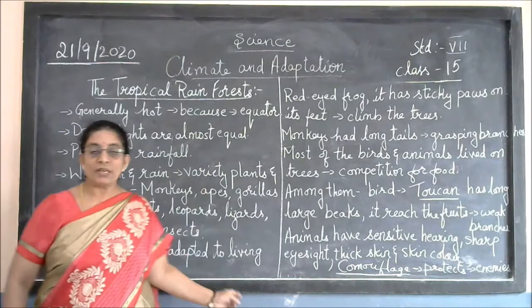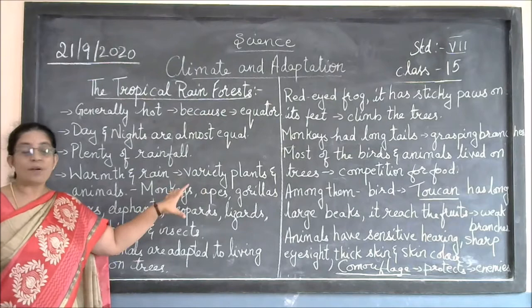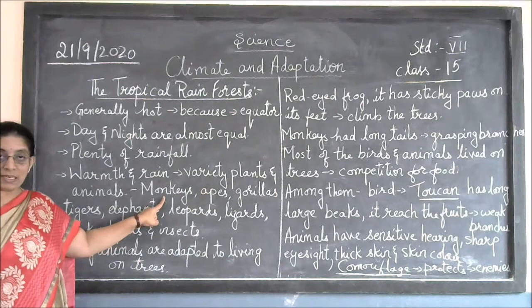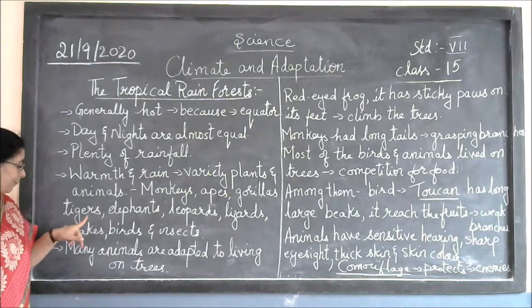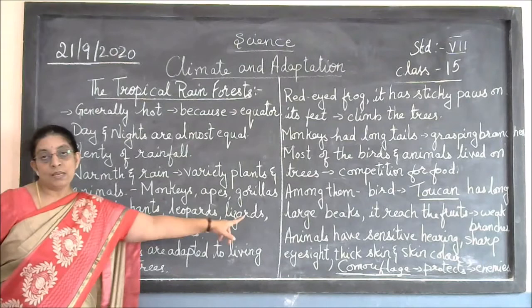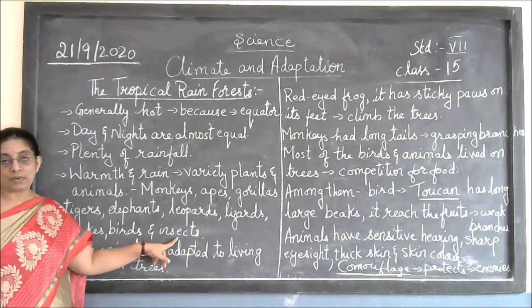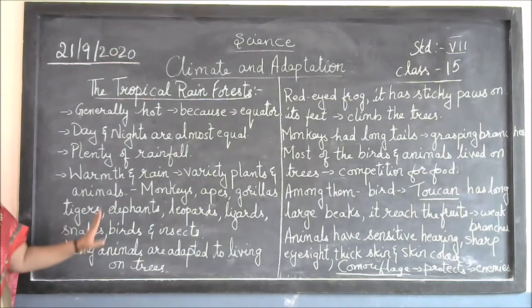We will see what animals are commonly found in this tropical rainforest. You can see many varieties of monkeys, apes — which look just like human beings — and gorillas. You can also see tigers, elephants, leopards, garden lizards, snakes, birds, and a number of varieties of apes. These are some of the animals which are found in the tropical rainforest.